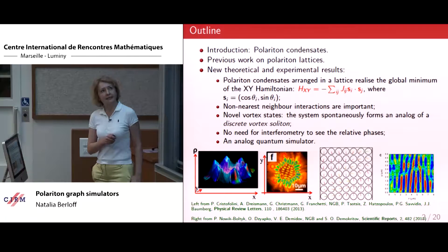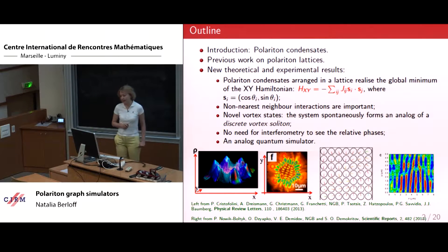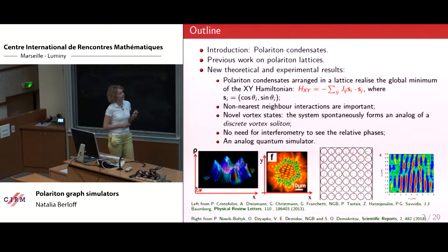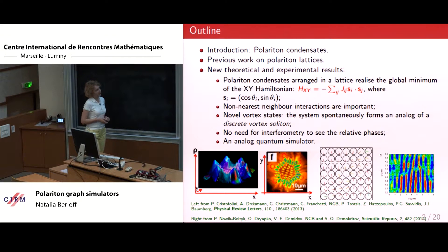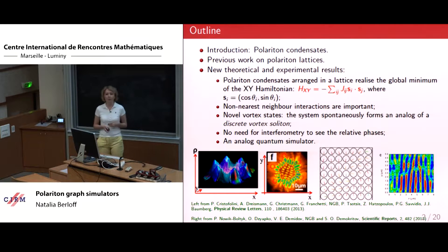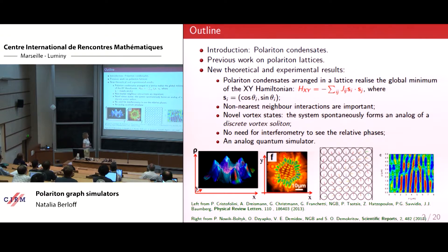The problem the system will solve is really NP-hard because non-nearest-neighbor interactions are important. We can work with geometry and pumping intensity to create any geometry of the system. I will briefly touch upon some novel states, like analogs of spontaneously created discrete vortex solitons. One advantage is that it's very easy to read off the solution — the minimum of this Hamiltonian — the values of the phases, because it simply comes from interferometry of the fluxes coming from each spot.